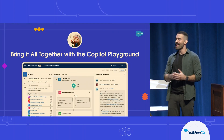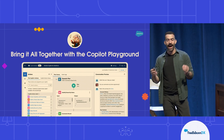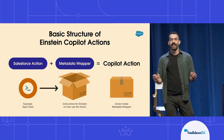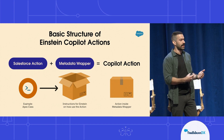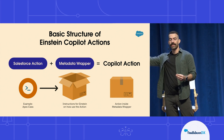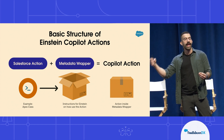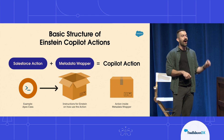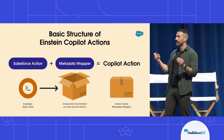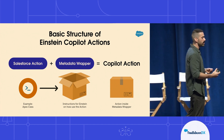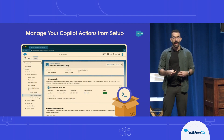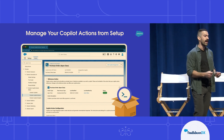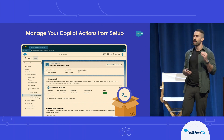Now to wrap it up, I'm eager to show you how everything comes together with the Einstein Copilot playground. But before diving in, let's take a moment to understand the basic structure of an Einstein Copilot action. Basically, the way a Copilot action works is that you take your Apex class, for example, and put it inside a metadata wrapper — think of it as a conceptual box. This box contains all of the instructions and configurations that Einstein needs in order to use the action during a Copilot conversation. All of these configurations are customizable directly from your setup page, so you can make sure the action works perfectly with your unique business processes.